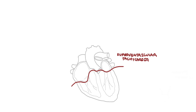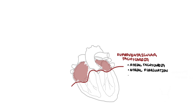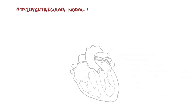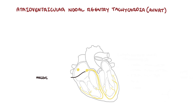Supraventricular tachycardia is an arrhythmia which occurs above the ventricles. Examples of supraventricular tachycardias include atrial tachycardia, atrial fibrillation, atrial flutter, atrioventricular re-entry tachycardia (AVRT), and atrioventricular nodal re-entry tachycardia (AVNRT). AVNRT is the classic supraventricular tachycardia and is a result of abnormal unsynchronized electrical transmission from the atrioventricular node to the ventricles.